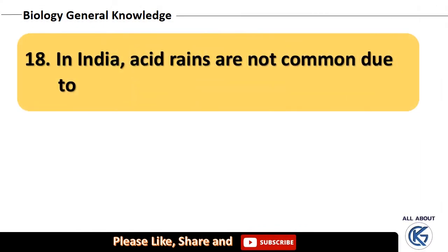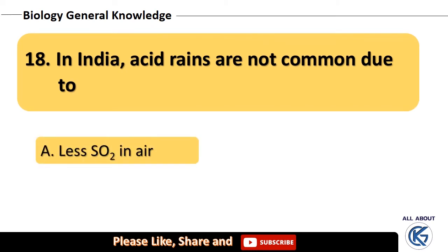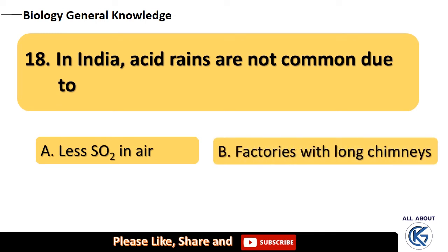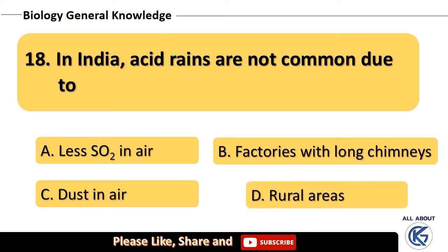In India, acid rains are not common due to — less sulfur dioxide in air, factories with long chimneys, dust in air, or rural areas? The right answer is dust in air.